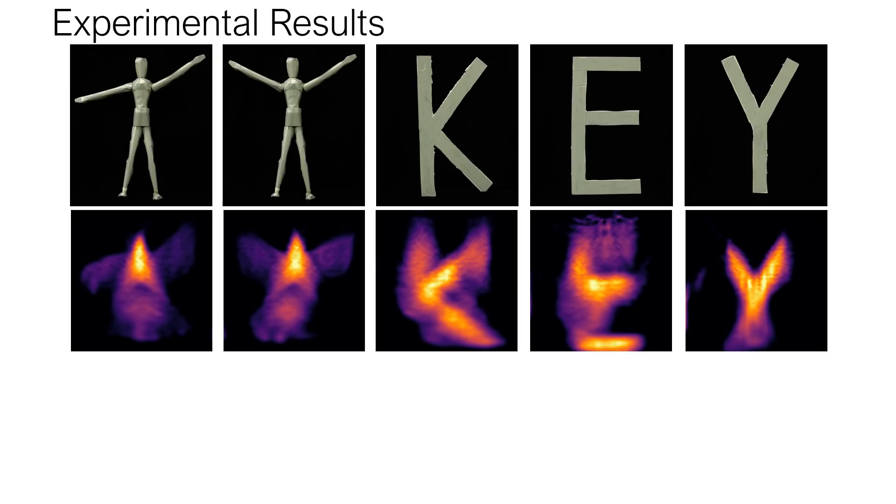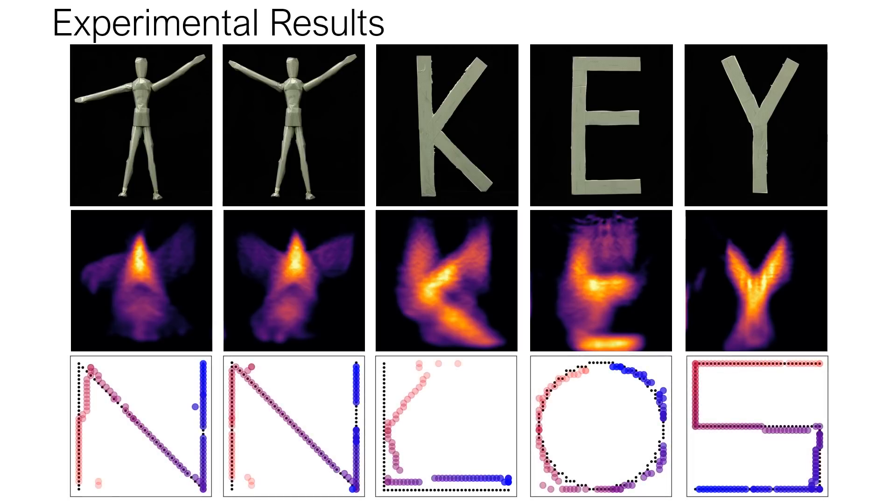We test our proposed method on a diverse set of hidden objects. It forms recognizable estimates of each object's shape and excellent estimates of each object's trajectory.